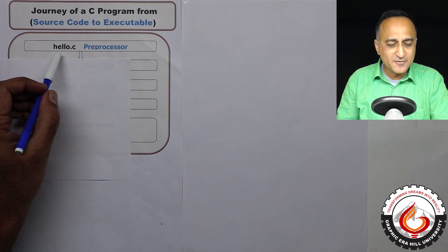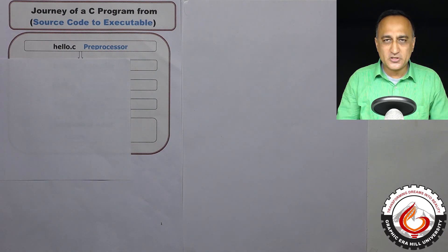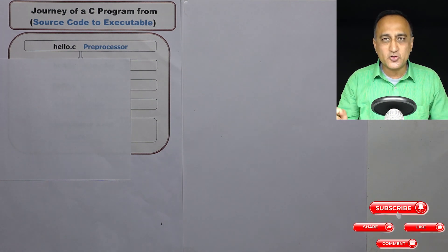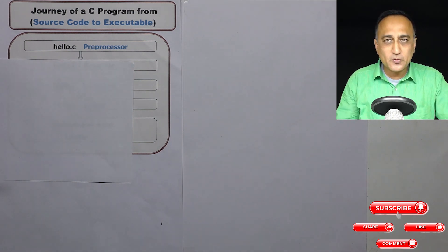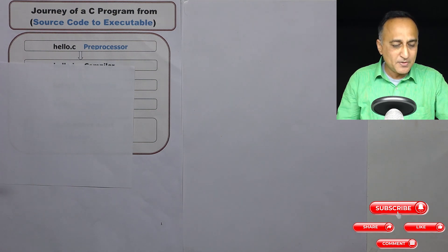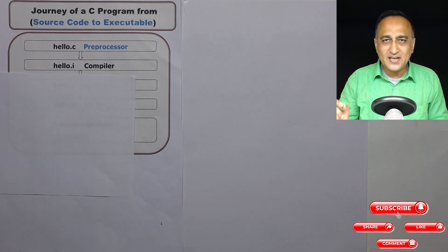The file is first sent to the preprocessor. The preprocessor does things like include the header files, remove the comments, and do conditional substitution or macro substitution. After the preprocessor processes the file, the output is a file named hello.i. This indicates that hello.c has been processed by the preprocessor.